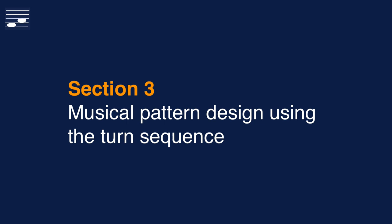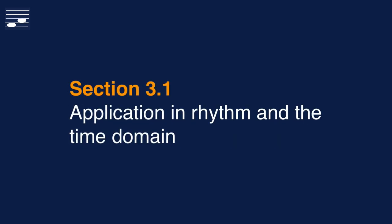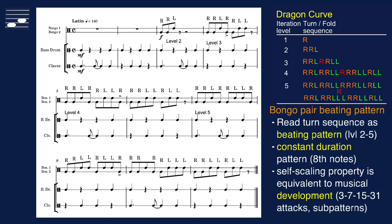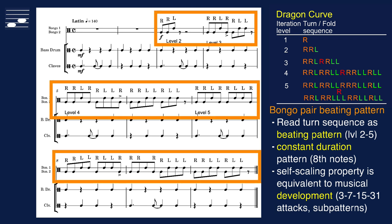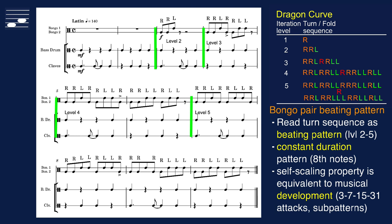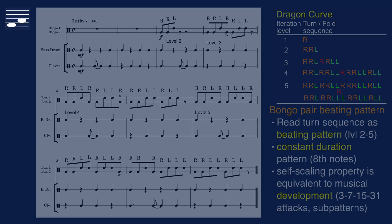Now let's actually create musical patterns from the fractal turn sequence, starting with the time domain and the design of rhythms. The first example is a beating pattern for a pair of bongos. The Dragon curve fractal turn sequence is shown at the top right. At any iteration level we may read the turns as a constant duration beating pattern, that is, all notes are equally long, here an eighth note. We observe bongo phrases with increasing length. The self-scaling property, with its returning subgroups and small-scale pattern repeats, has musical development character, which is the most useful and interesting property. Listen to an audio rendering of this Latin rhythm.